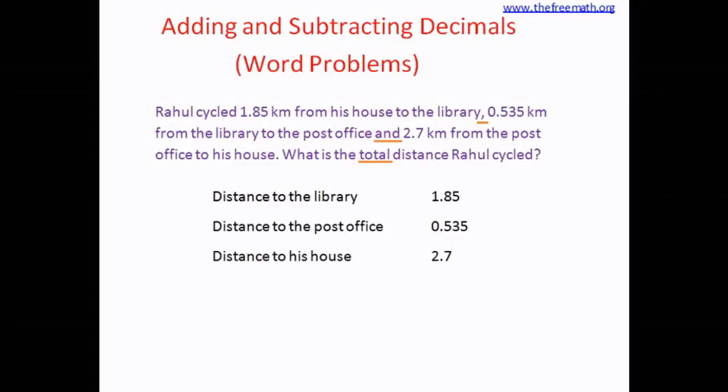Here also you can see the word 'and,' and in the end it says what is the total distance. So whenever you see the word 'total' that means you have to put together or group together, and putting together means addition. So let's add these three decimal numbers.